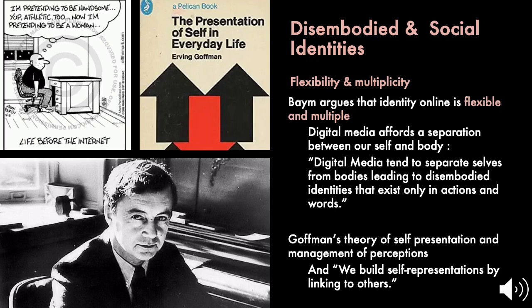She has this anecdote of a kind of funny comic showing life before the internet, where people were pretending or expressing different identities but had no context in which to do that except their own mind. She points out that digital media affords the separation between ourselves and our body, and that separation leads to disembodied identities that exist through words and actions rather than what we look like. For many of you, this would be complicated by the use of deep fakes and filters — you have never really existed as adults on the internet in a time before the ease of physical representation. It's a lot harder outside of spaces like Reddit boards or Discord to exist in a disembodied way.